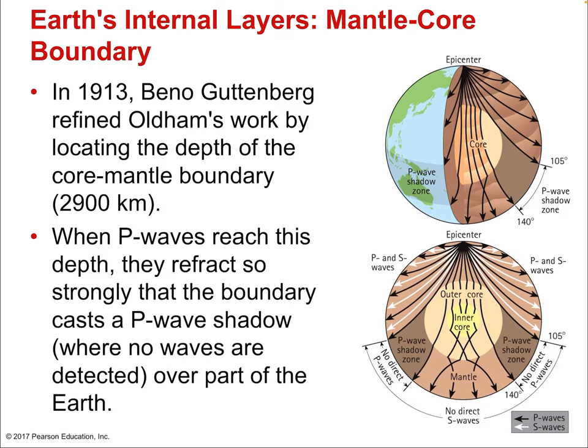In 1913, Benno Gutenberg refined Oldham's work by locating the depth of the core-mantle boundary at exactly 2,900 kilometers. To put that in context, the radius of the Earth is 6,300 kilometers — so it's a little less than halfway down. When P-waves reach this depth, they refract so strongly that the boundary casts a P-wave shadow where no waves are detected over part of the Earth, because the refraction means certain spots can never be reached.